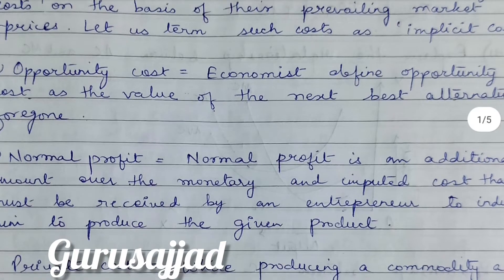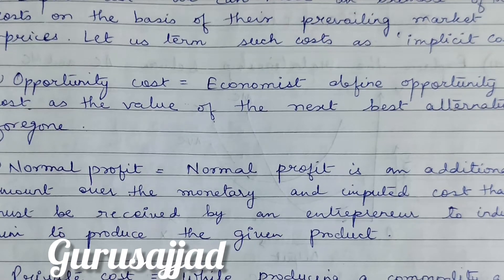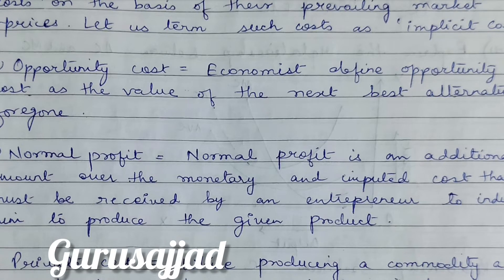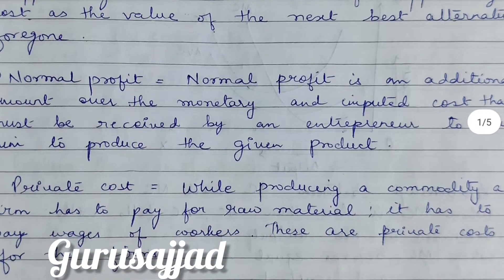Next is opportunity cost. Economists define opportunity cost as the value of the next best alternative forgone. For example, we have an option to buy machine A at Rs. 50,000 or machine B at Rs. 40,000. We bought the machine priced at Rs. 50,000 because it produces more and better quality products. In this case, our opportunity cost is Rs. 40,000 — the cost of the best alternative we gave up.